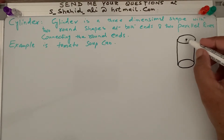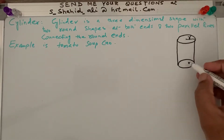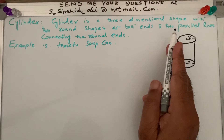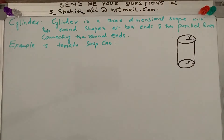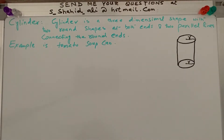If it is a round shape — like a circle or circular shape — that means it has got a radius. We learned in the last video, the last chapter, about the circle. So, a cylinder is a three-dimensional shape with two round shapes at both ends and two parallel lines connecting the two round ends. This is how we define a cylinder.